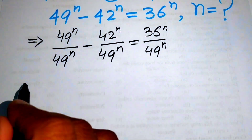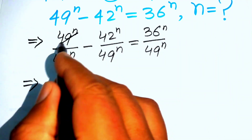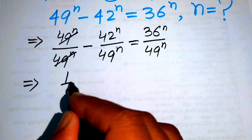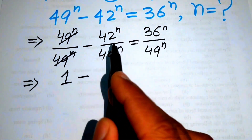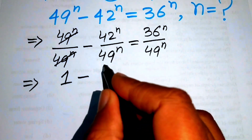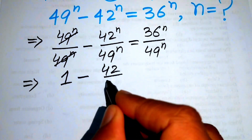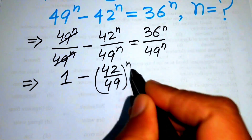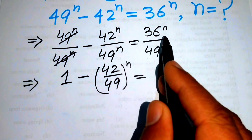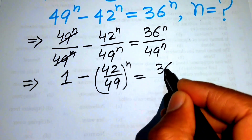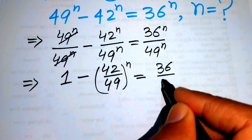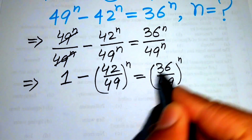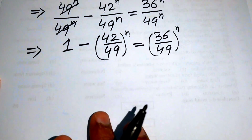The 49^n terms cancel, leaving 1. Then we combine the exponents of the remaining terms and write it as 1 minus (42/49)^n equals (36/49)^n.